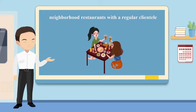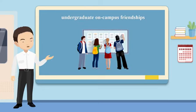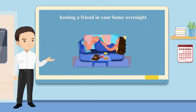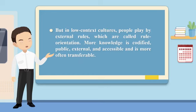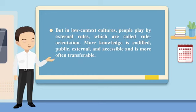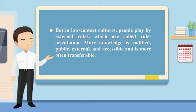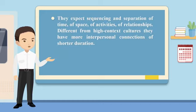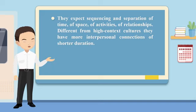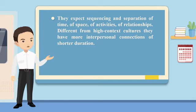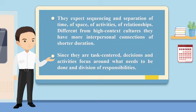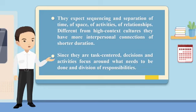Other high context examples include neighborhood restaurants with regular clients, undergraduate on-campus friendships, regular pick-up games, and hosting a friend in your home overnight. In low context cultures, people play by external rules — called rule orientation. More knowledge is codified, public, external, with separation of time, space, activities, and relationships. They have more interpersonal connections of shorter duration. Since they are task-centered, decisions and activities focus around what needs to be done and a division of responsibilities.